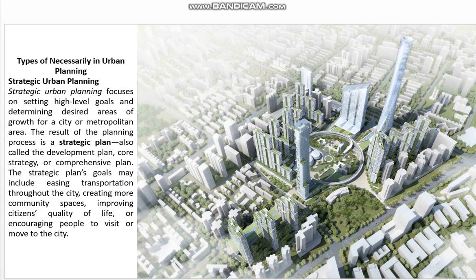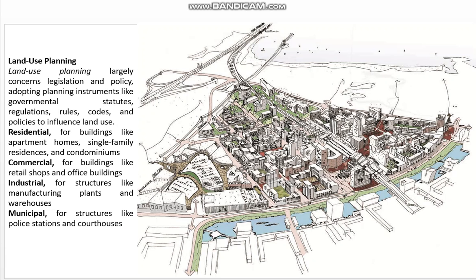Land use planning largely concerns legislation and policy, adopting planning instruments like governmental statutes, regulations, rules, and policies to influence land use. Categories include: residential for buildings like apartment homes and single-family residences; commercial for buildings like retail shops and office buildings; industrial for structures like manufacturing plants and warehouses; and municipal for structures like police stations and courthouses.